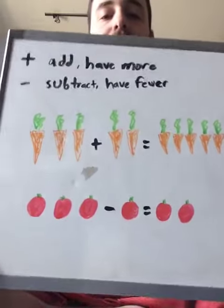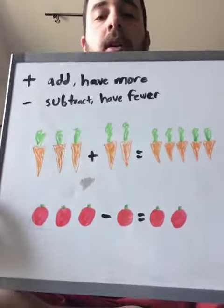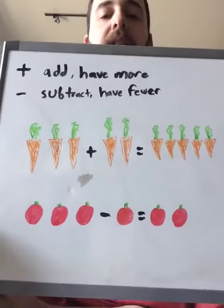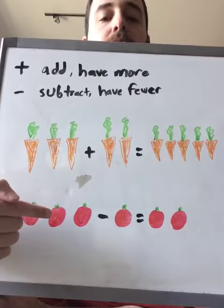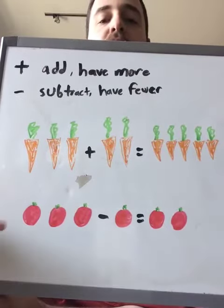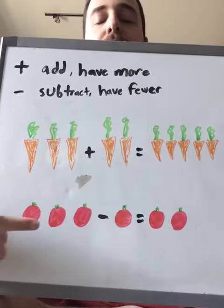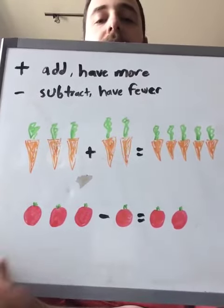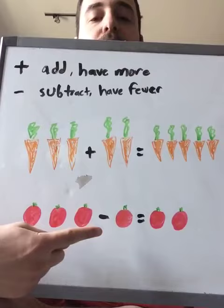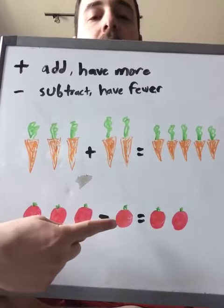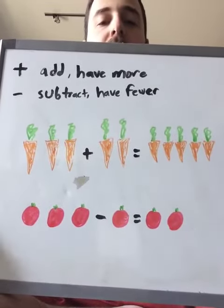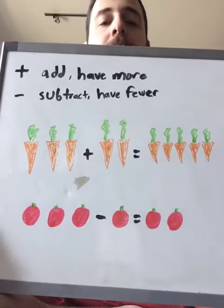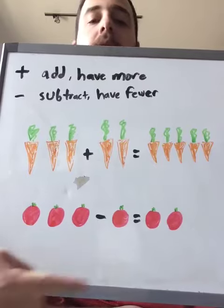Let's try the one down here. Let's count how many tomatoes we have. One, two, three. So if we have three tomatoes and subtract one tomato, how many will we have left? Let's count.